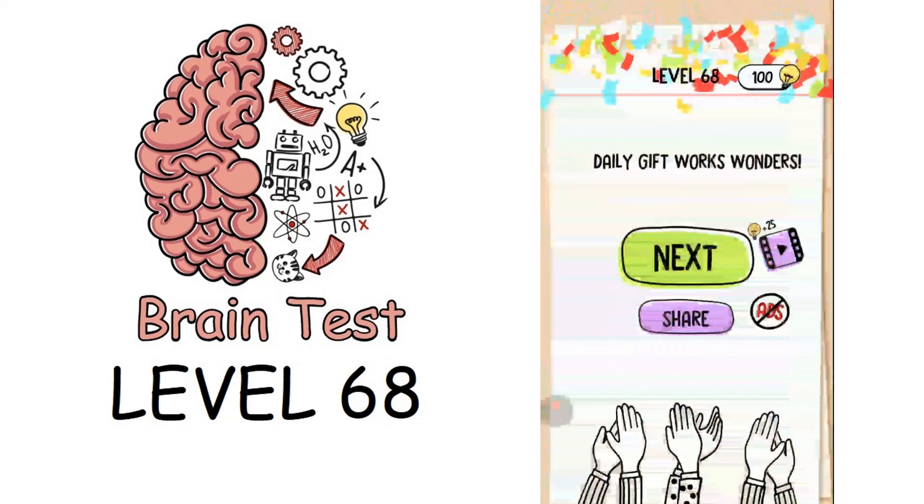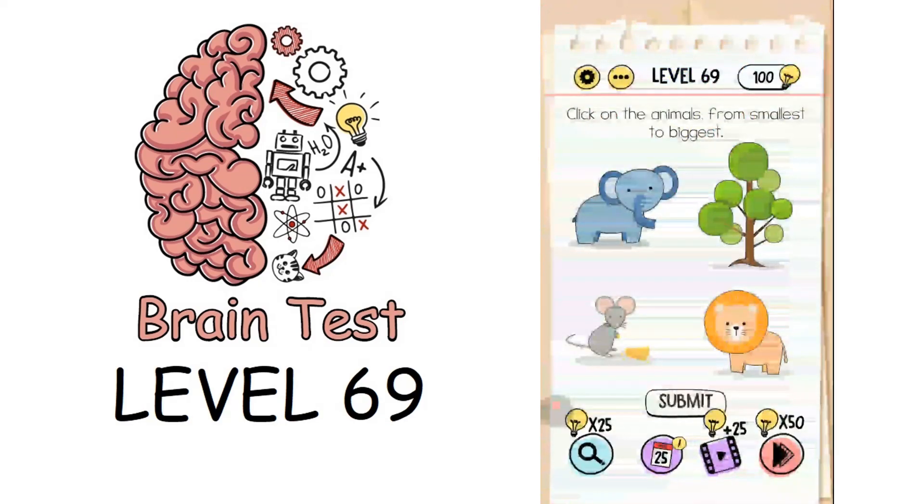Now we're on to level 69: click on the animals from smallest to biggest. The smallest animal is rat, then it's lion, then elephant. Tree is not an animal, so let's click submit. That solves the puzzle.